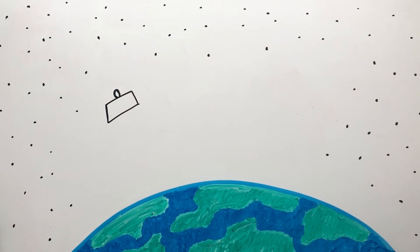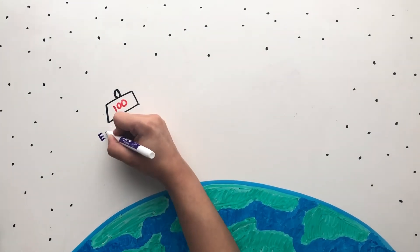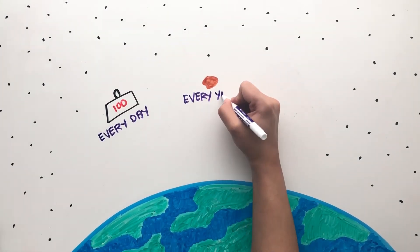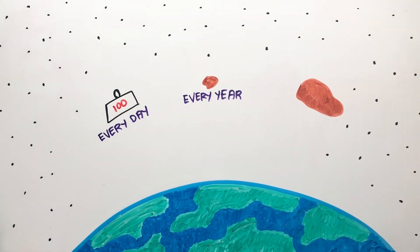100 tons of material from asteroids and comets fall towards the Earth every day, a piece of an asteroid fall every year, and an asteroid the size of a football field hit once every 2,000 years.